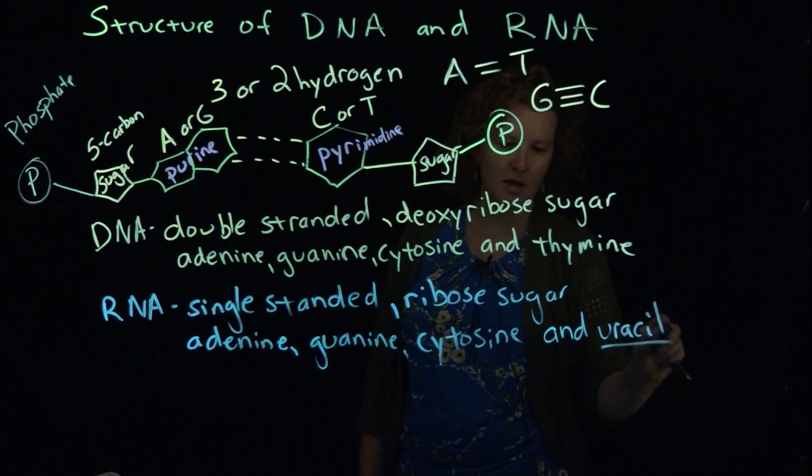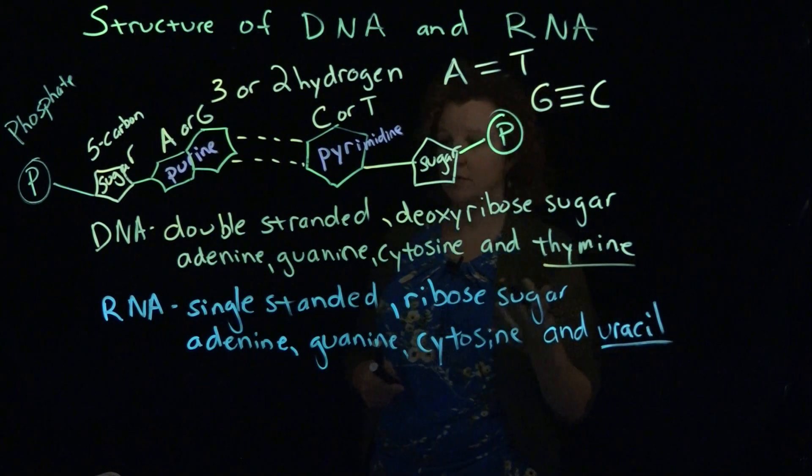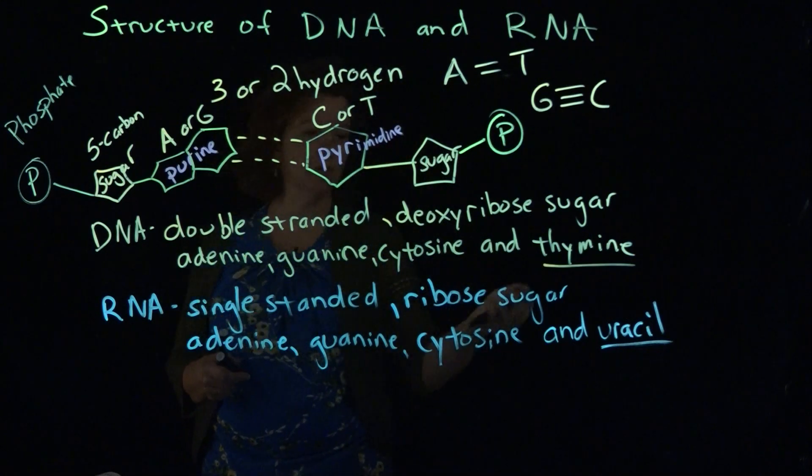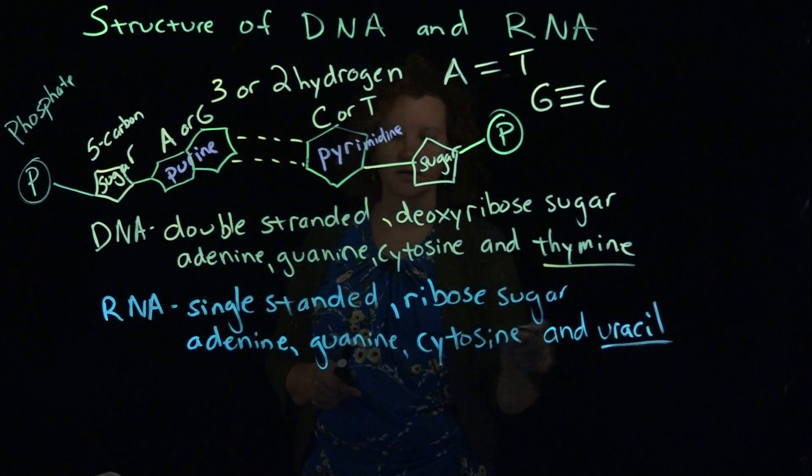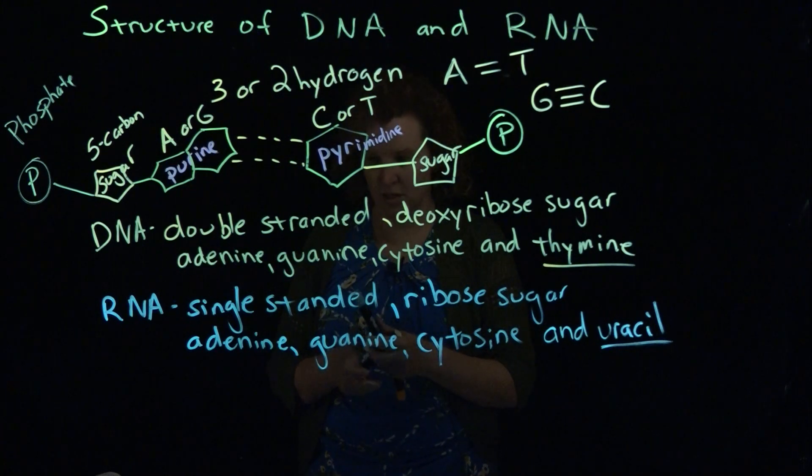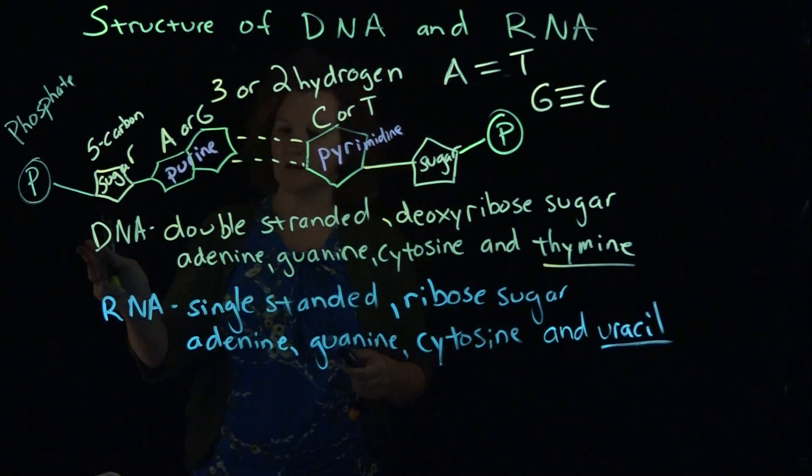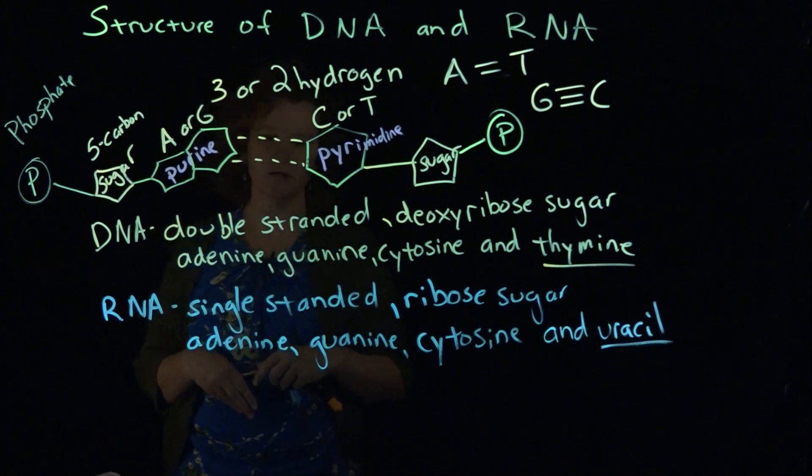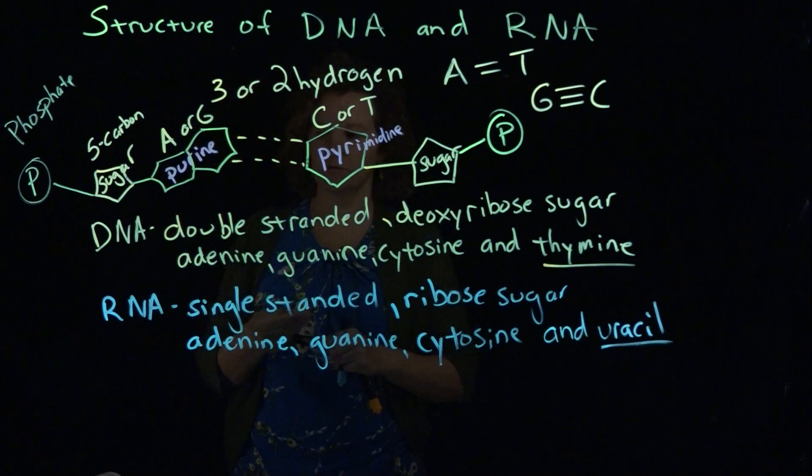If you're not sure about which substance you're looking at, you can look for whether it's single or double-stranded and the sugars, but one of the quickest things is to see whether it contains the T or the U in the chain. DNA is the permanent inheritance molecule that's passed down through the generations.